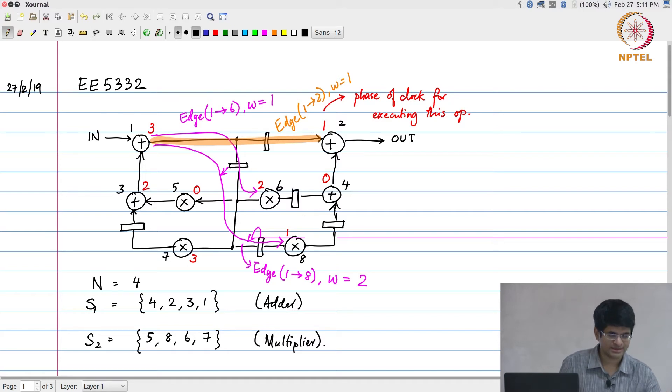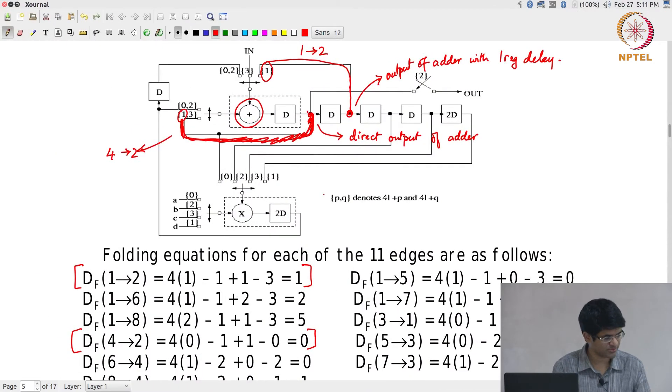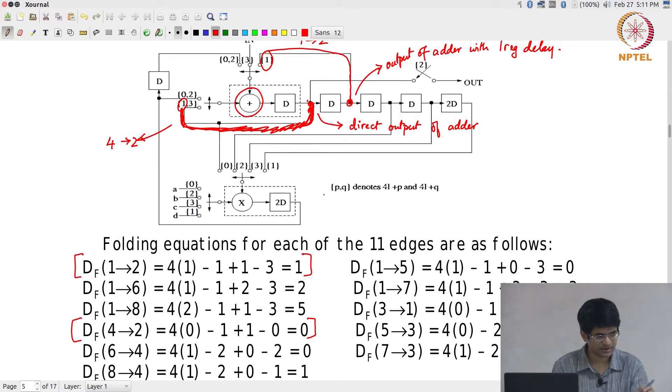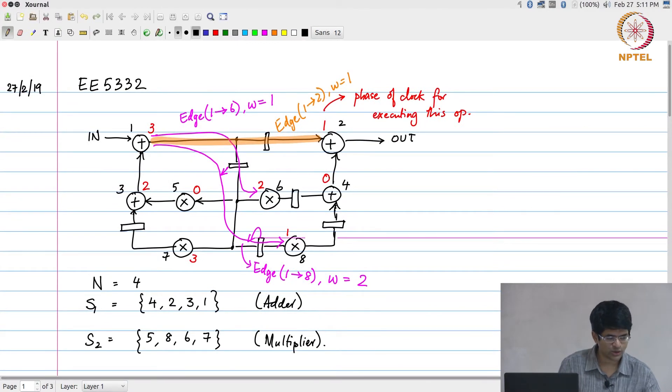The inputs to 4 are coming from 6 and from 8. The corresponding DF values, let us just simplify matters and go look at this. These are the two values that I am interested in. DF from 6 to 4 essentially corresponds to 0 minus 2 minus 2 minus 2, minus 4 plus the one sample delay over here. It basically becomes 4 minus 4 equal to 0.